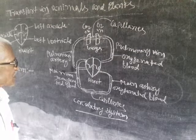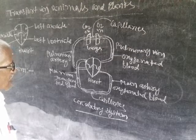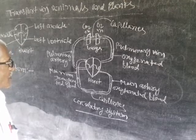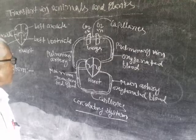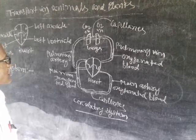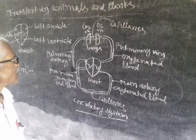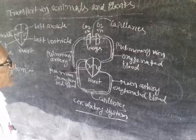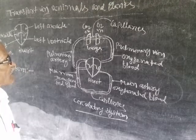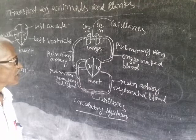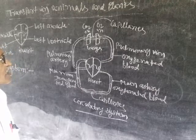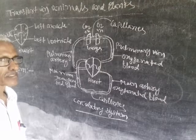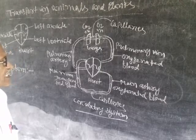This deoxygenated blood is carried by the main vein to the right auricle. From the right auricle, blood comes down into the right ventricle. From the right ventricle, the pulmonary artery carries deoxygenated blood to the lungs, where carbon dioxide comes out and oxygen comes in, due to which blood becomes oxygenated again.